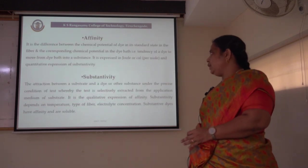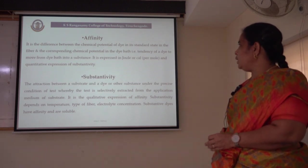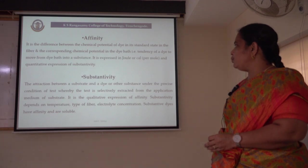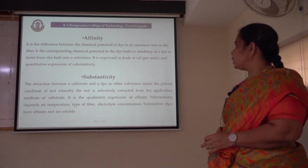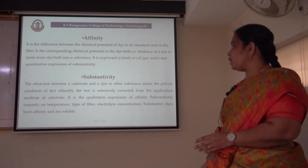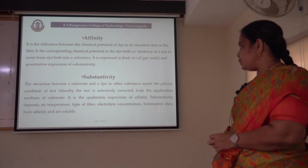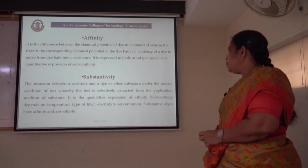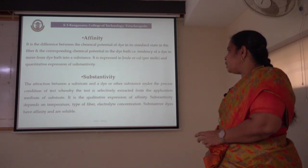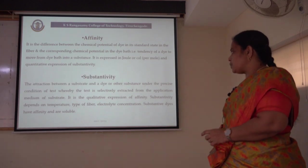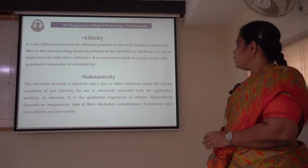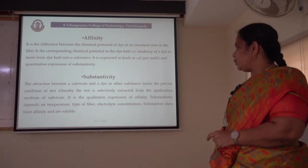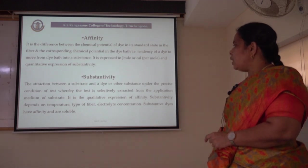Coming first to affinity — it is the difference between the chemical potential of the dye in its standard state in the fibre and the corresponding chemical potential in the dye bath; that is, the tendency of a dye to move from the dye bath into the substrate. It is expressed in joules per mole and is a quantitative expression of substantivity. Coming next to substantivity — it is the attraction between a substrate (our textile material) and a dye under the precise conditions of test, whereby the dye is selectively extracted from the application medium by the substrate. It is the qualitative expression of affinity. Substantivity depends on the temperature of the process, the type of fibre used, and the concentration of electrolyte present in the dye bath. Substantive dyes have affinity and are mostly soluble.